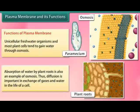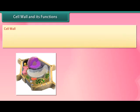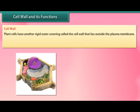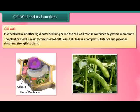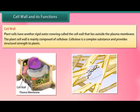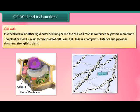Cell wall and its functions: Plant cells have another rigid outer covering called the cell wall, which lies outside the plasma membrane. The plant cell wall is mainly composed of cellulose, a complex substance that provides structural strength to plants. Cell wall provides...